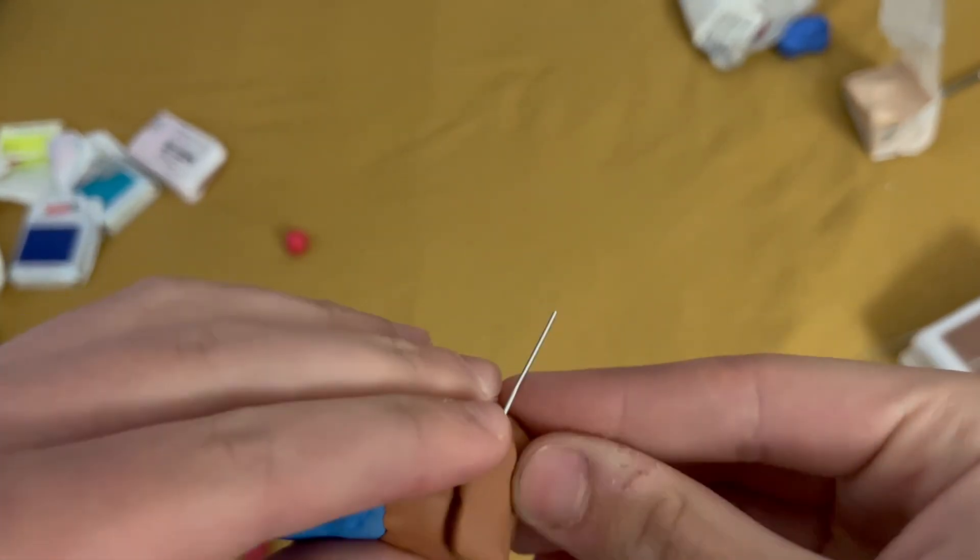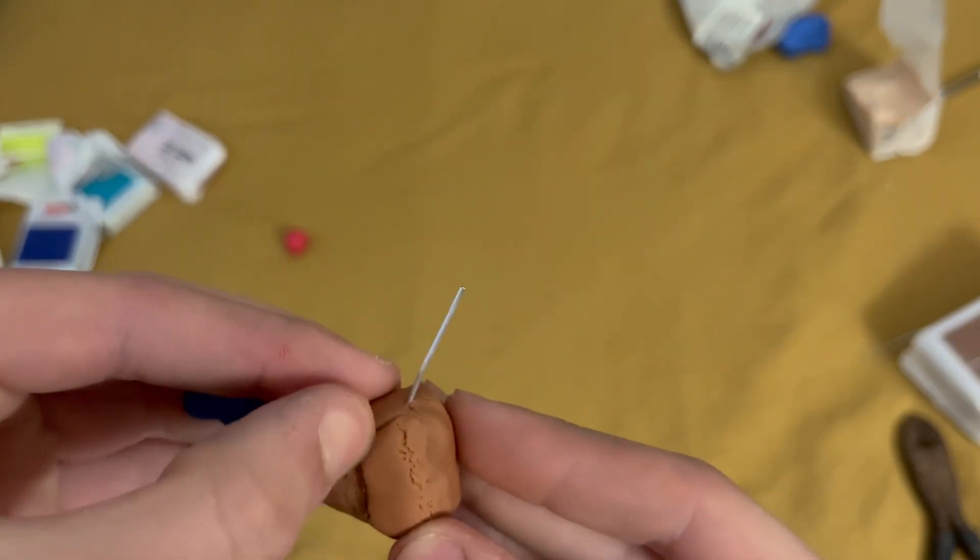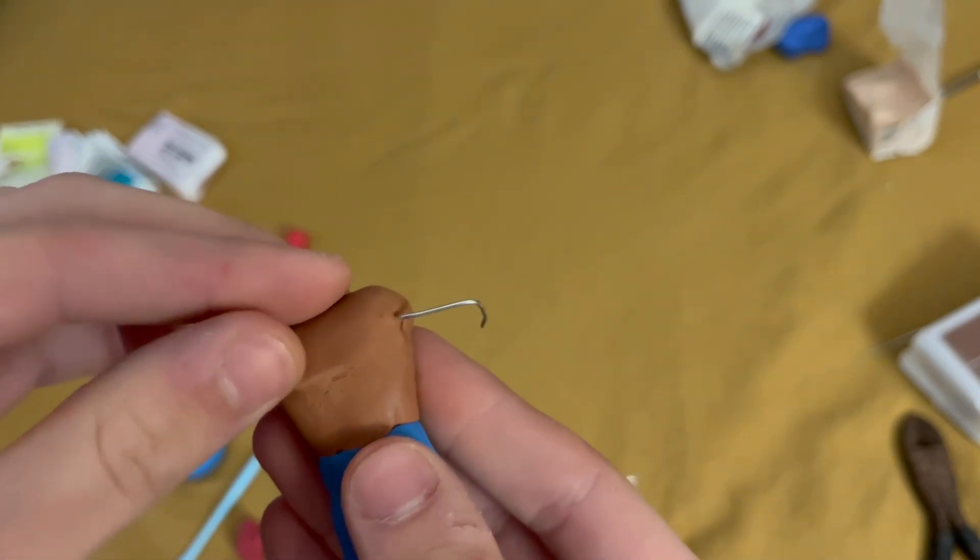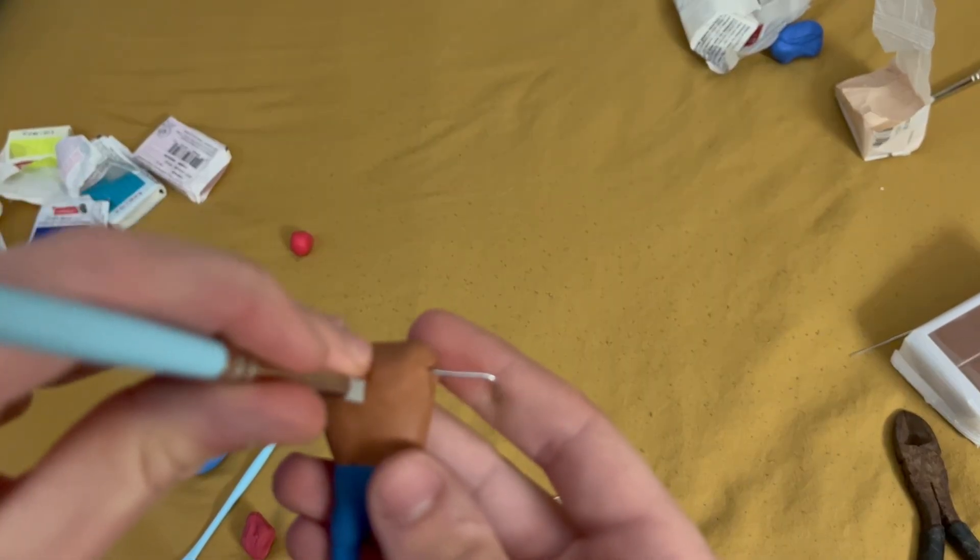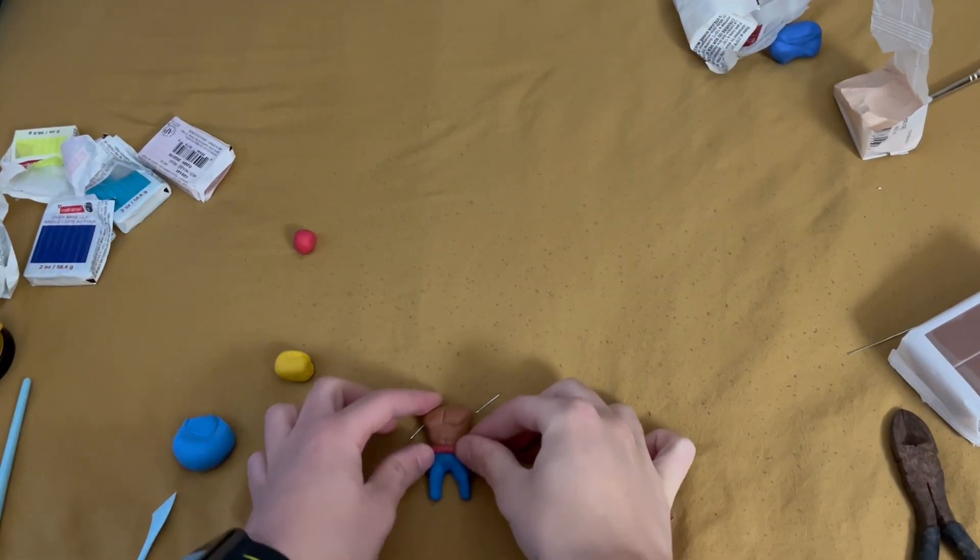After that, I add something similar but slightly smaller onto the back, and then blend it into the rest of the body. Once this is blended in, I add a seam all the way from the top of the body to the bottom of the body, instead of just on the top.